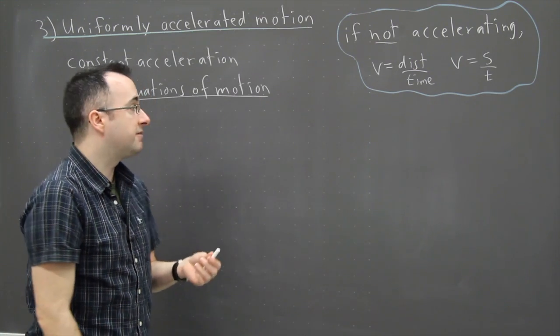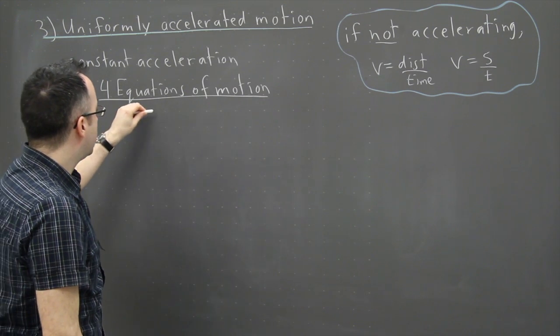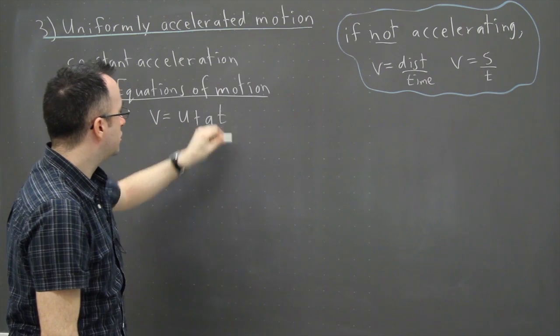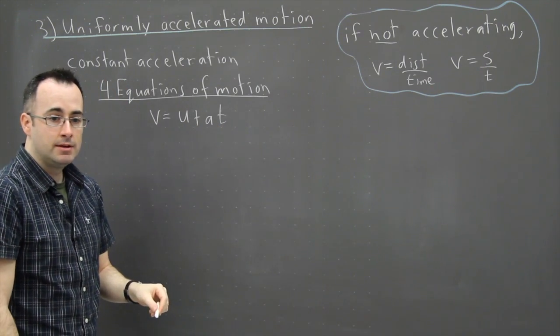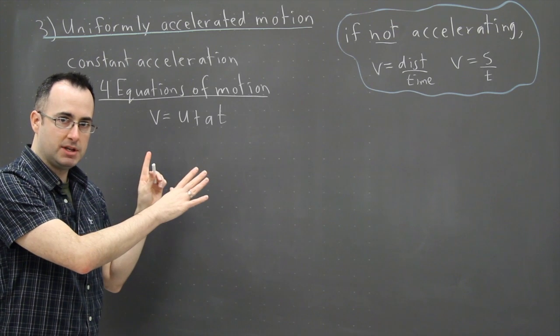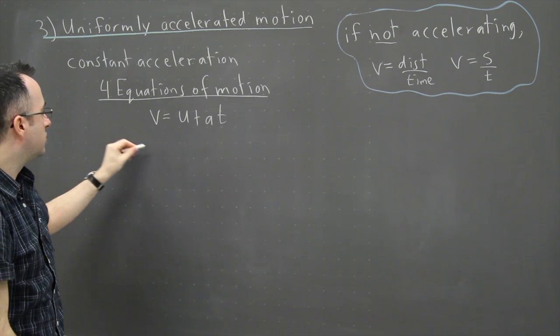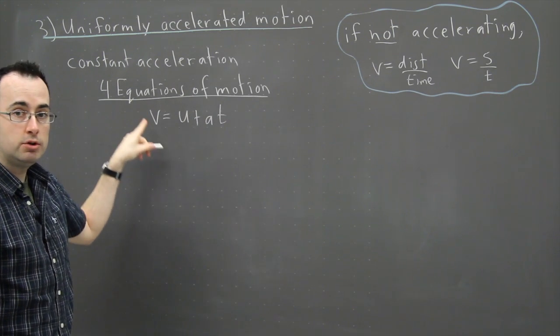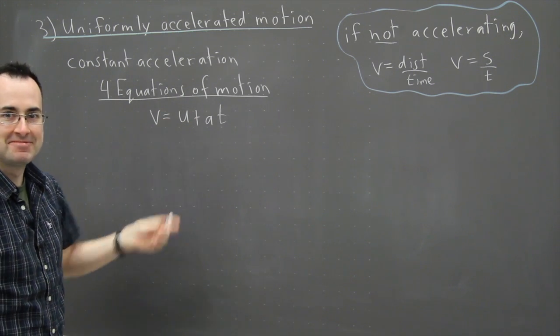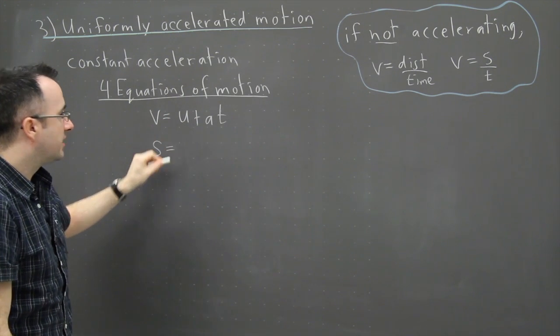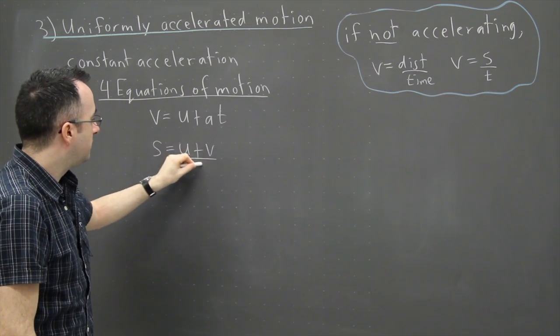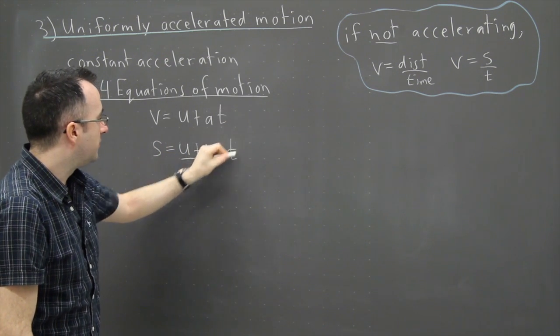So what I'm going to do is as we go along, I'm going to make sure to highlight the ones that I think are worth memorizing. There's not very many, but the very first one I'm going to give you is actually one of them. So the first of the equations of motion that's not given in your data booklet is this one right here: V equals U plus AT. I consider that equation one. I'll explain what each of these means in a second here. But then that one right there is not in your equation sheet or data booklet. However, this one here is: S equals U plus V divided by two, all that times T.